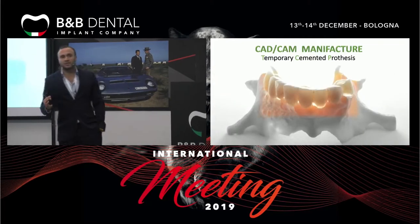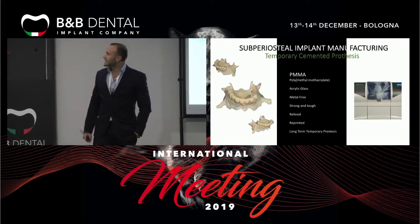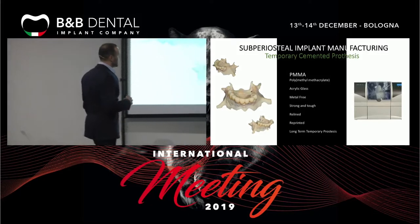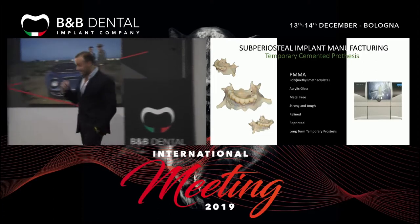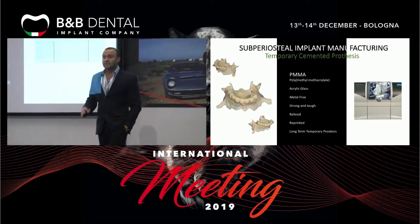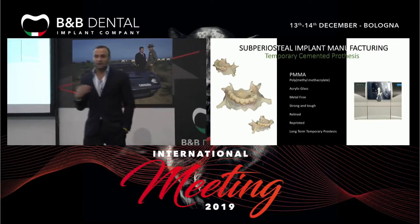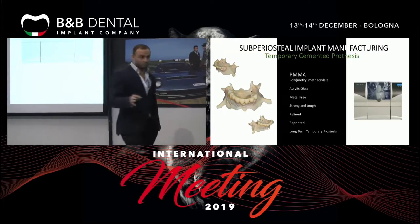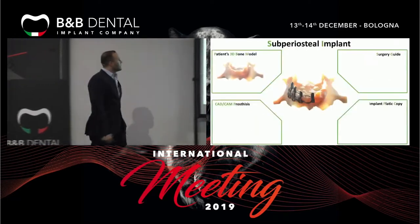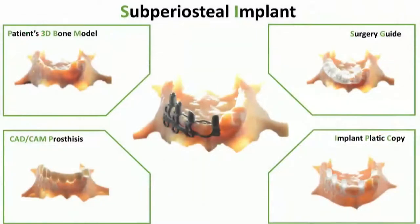The temporary cemented prosthesis is polymethylmethacrylate — acrylic glass — metal-free, strong, tough, relineable and reprintable. If there is a problem, it can be fixed with composite or the structure can be reprinted at low cost. It should be considered a long-term temporary prosthetic solution. In summary, the complete digital package includes: the 3D bone model, surgery guide, structural copy, prosthesis, and the subperiosteal framework.